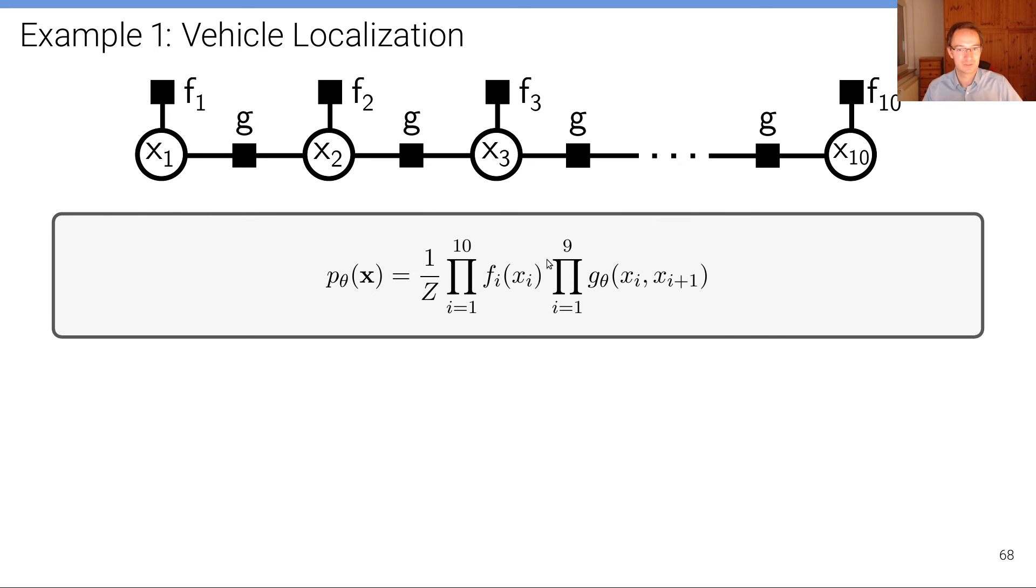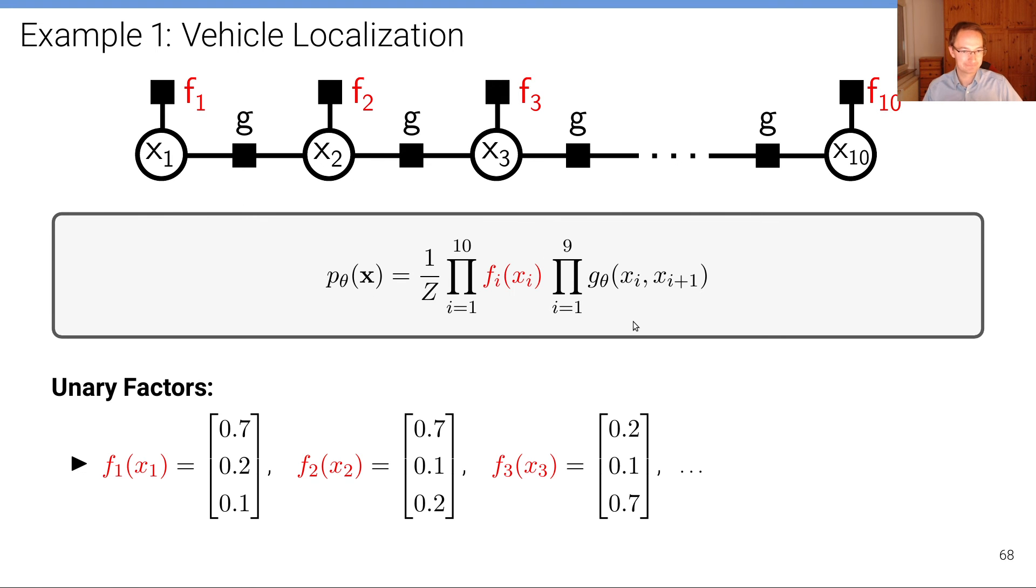The unary factors we directly take as the observation probability scores, so for instance 0.7 for the first lane, 0.2 and 0.1 and so on.